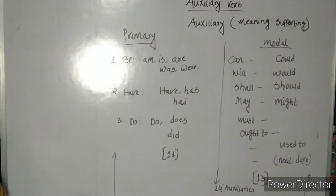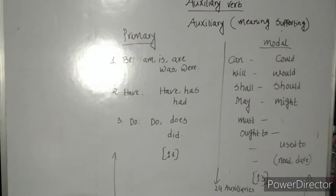Primary auxiliaries are those: Number 1, be verb — am, is, are, was, were. Number 2, have verb — have, has, had. Number 3, do verb — do, does, did.